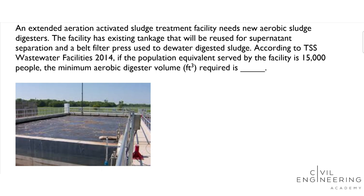The problem statement says an extended aeration activated sludge treatment facility needs new aerobic sludge digesters. The facility has existing tankage that will be reused for supernatant separation and a belt filter press used to dewater digested sludge. According to TSS Wastewater Facilities 2014, if the population equivalent served by the facility is 15,000 people, the minimum aerobic digester volume required is what?